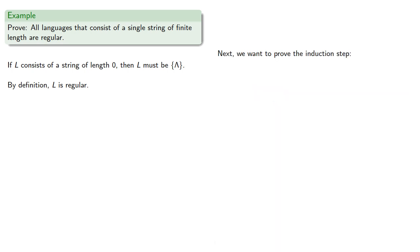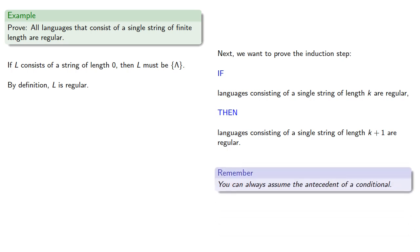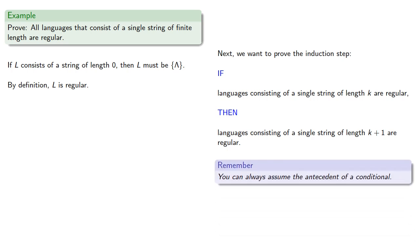Next, we want to prove the induction step: if languages consisting of a single string of length k are regular, then languages consisting of a single string of length k plus 1 are regular. Now we're trying to prove an if-then statement — in other words, a conditional. Whenever you're trying to prove a conditional, you can always assume the antecedent; we can assume the 'if' portion and take that as our starting point.